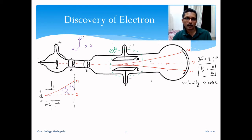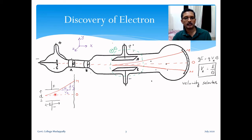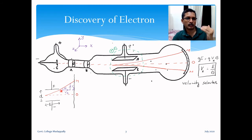Now let us see how Thomson used the x-component of velocity to calculate the charge-to-mass ratio. Looking at the figure with the metal plates: the separation between the plates is d and the length of the metal plates is l. When the electric field is switched on, the electron beam travels along a parabolic path within the field. Once it leaves the electric field, it travels in a straight tangential line and strikes the screen at point M. The maximum deflection angle θ occurs just as the electron leaves the electric field.